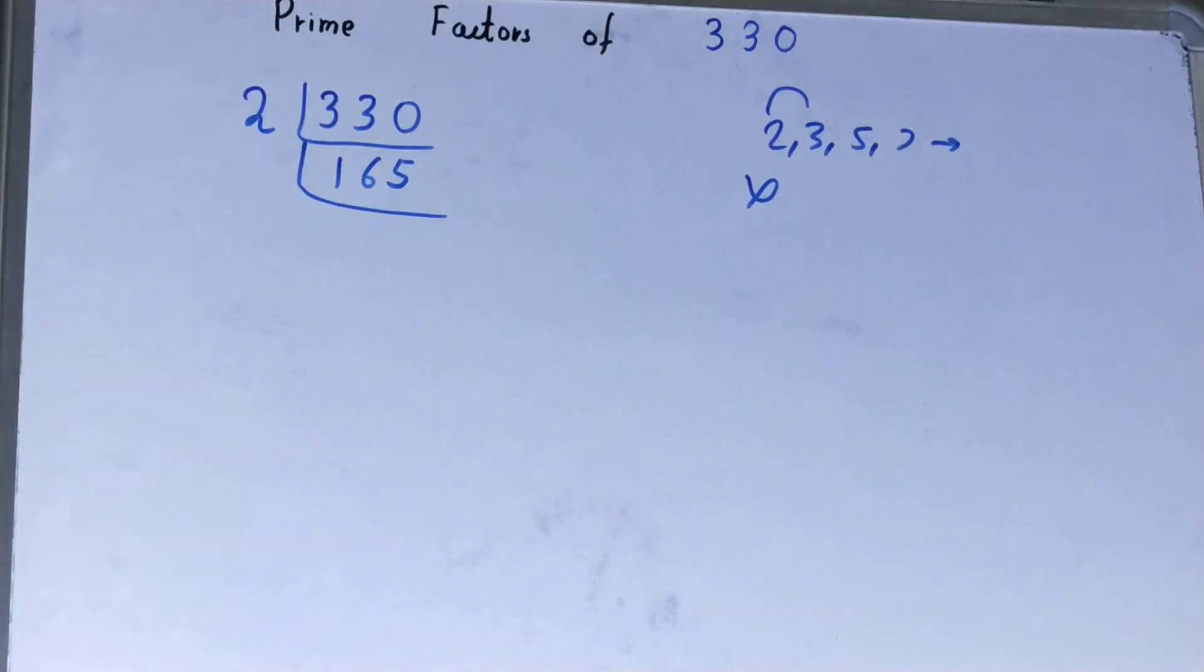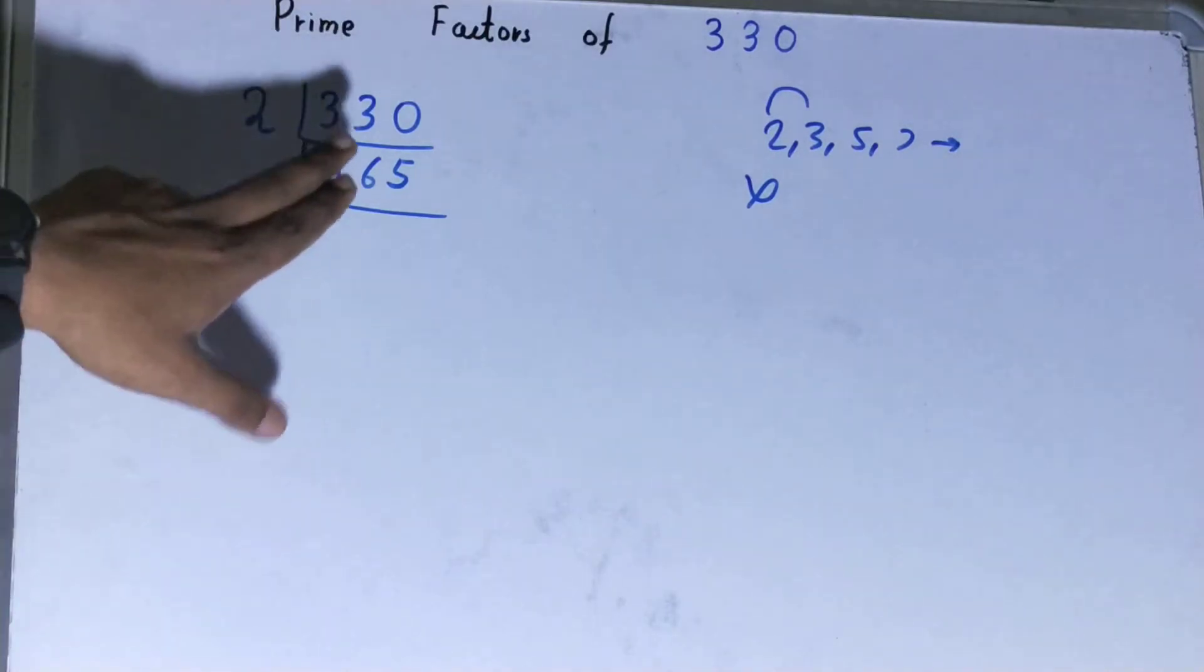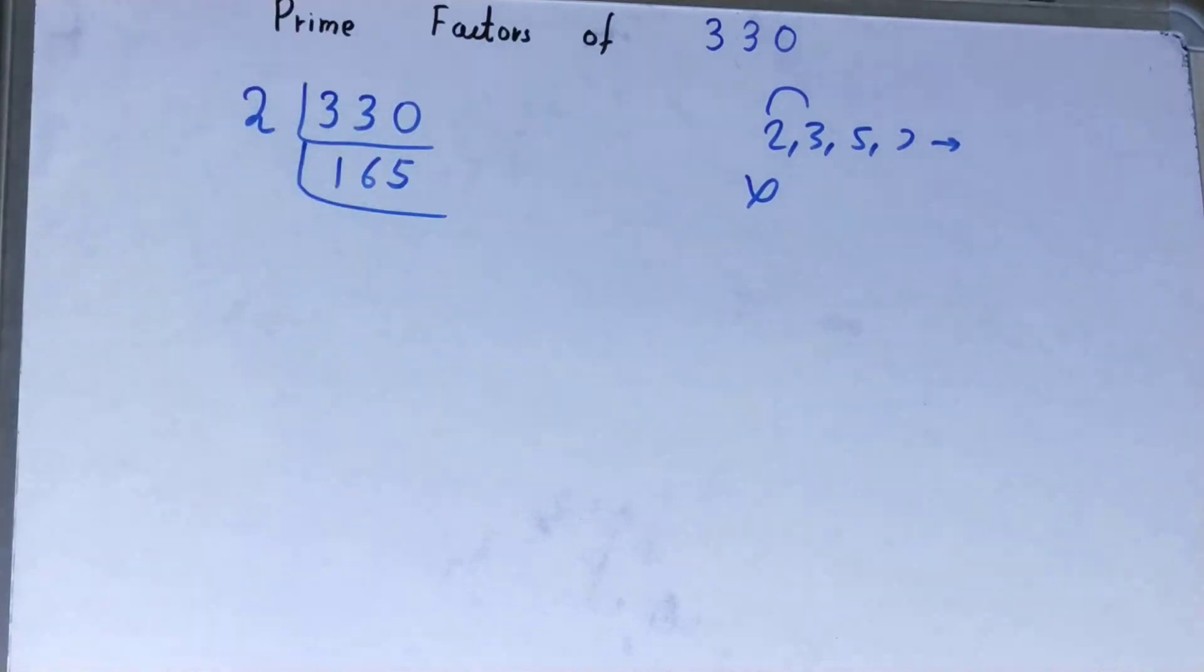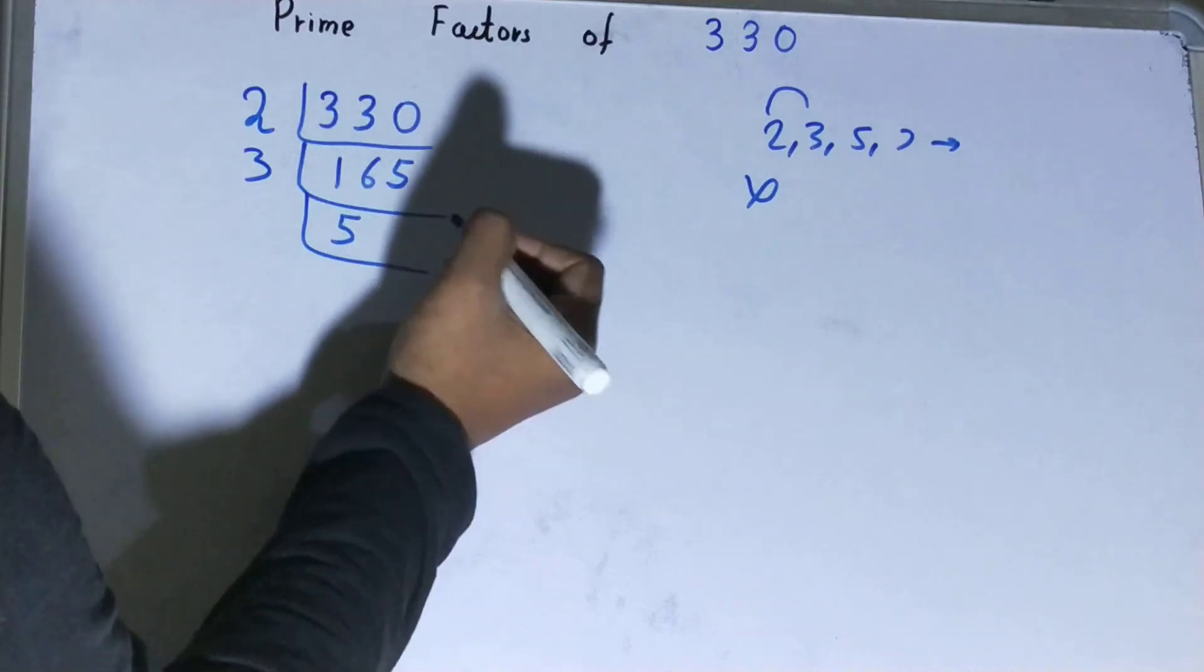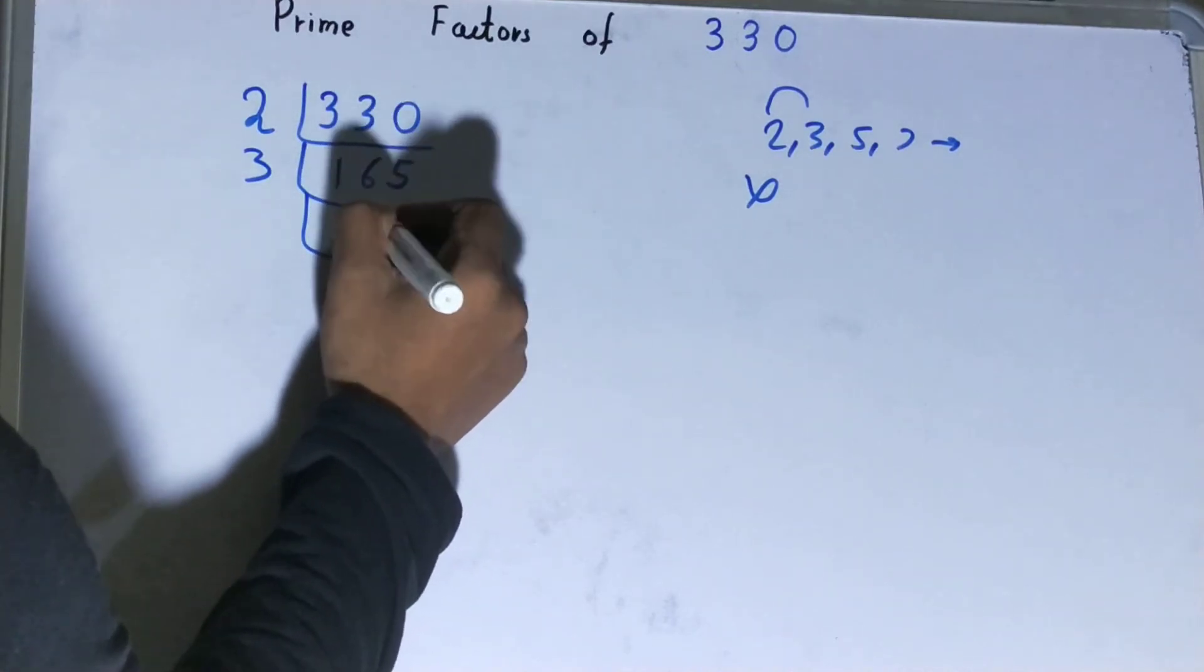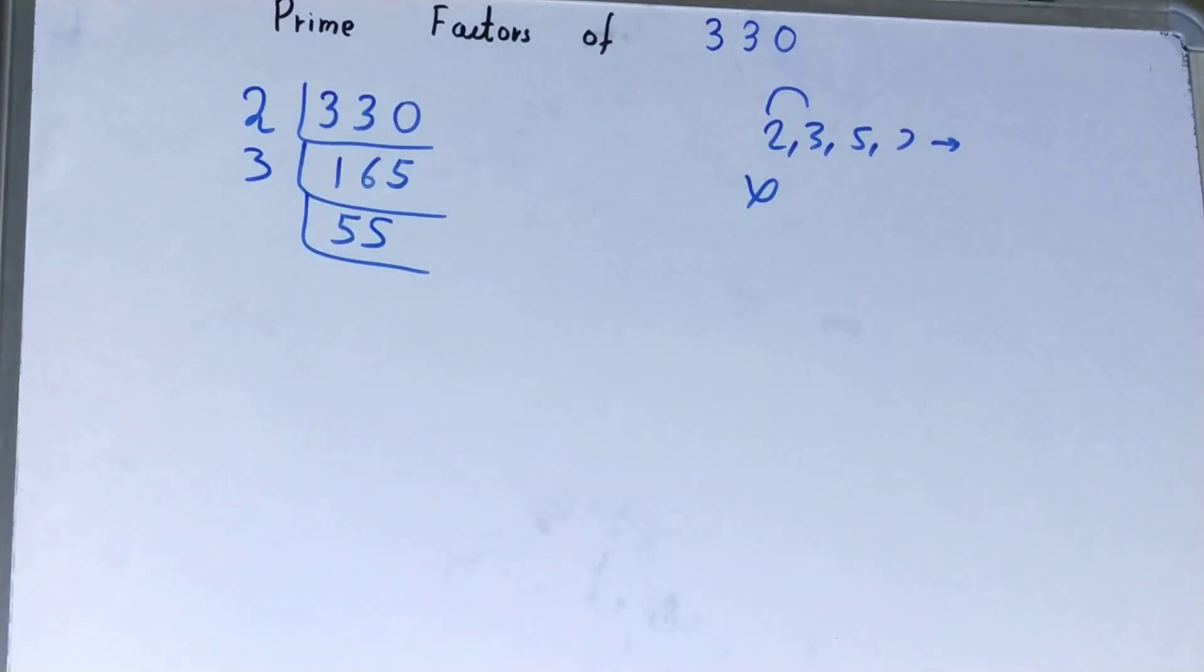Is the number 165 divisible by 3? Let us check. Yes, it is divisible. So divide it and you get 55. Now this 55 is not divisible by 3, so we'll go to the next lowest prime number, that is 5.